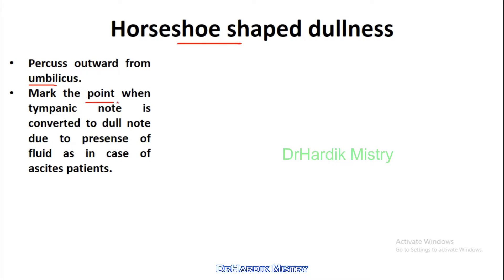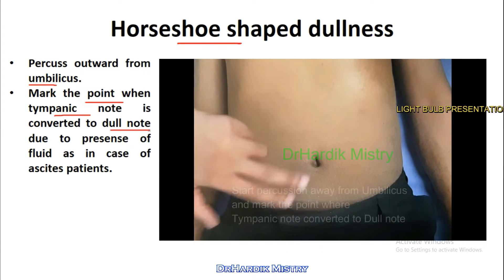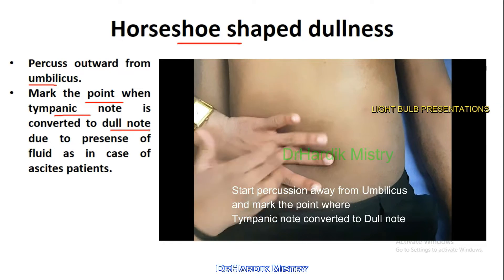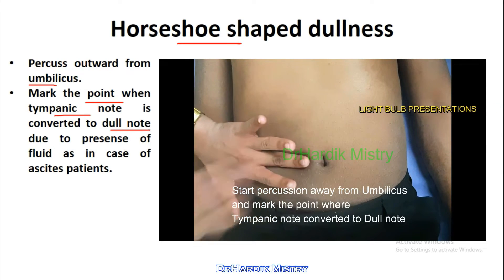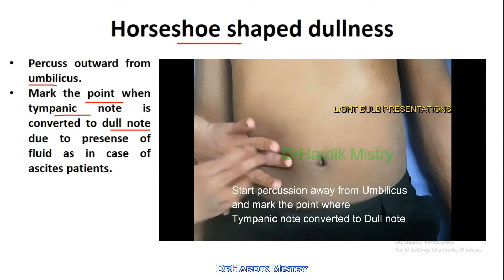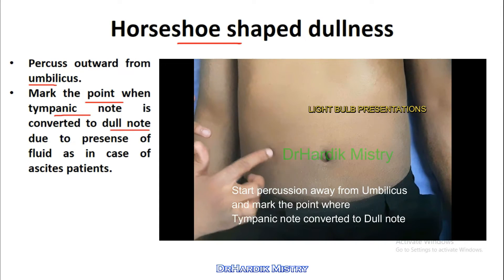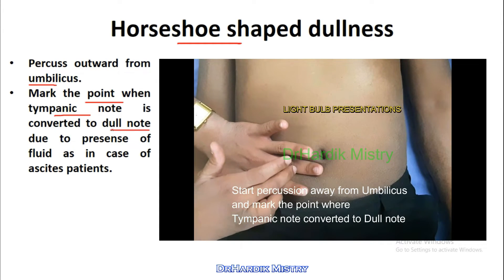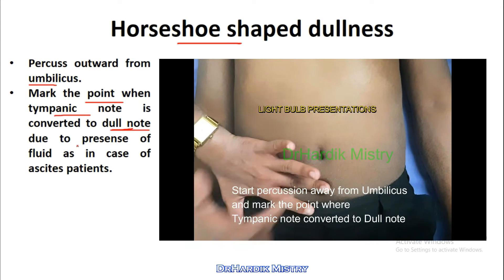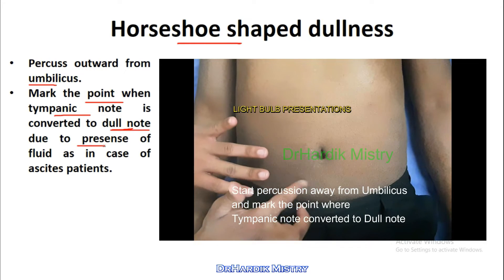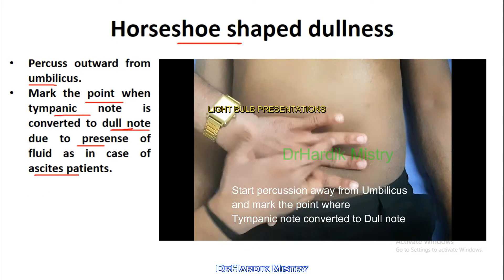Mark the point when the tympanic note is converted to the dull note. In a normal subject, when you percuss over the anterior abdominal wall you will hear a tympanic note, but in cases of an ascites patient where fluid is accumulated, you will hear a dull note. Mark that point where the tympanic note is converted to the dull note, as it is due to the presence of fluid in ascites.